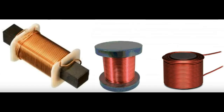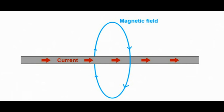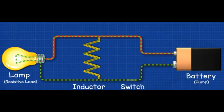An inductor is a coil of wire wrapped around a magnetic material. If the amount of current flowing through the inductor is constant, then it will not generate any force on the charge particles flowing through it. In that case, the inductor will behave just like a normal wire.